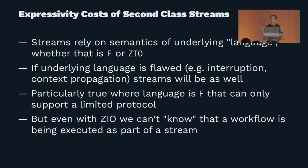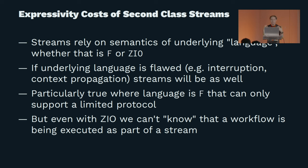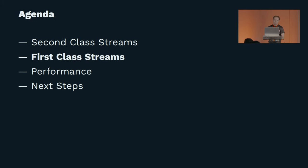That's particularly true when working with something like an F where you have only a limited protocol — if you're at a streaming level and need something that doesn't exist at the protocol level, you're stuck because the protocol is what it is. Even in the ZEO world that can be a limitation: a ZEO itself doesn't know it's being run as part of a stream and needs to have the same execution semantics regardless of context.